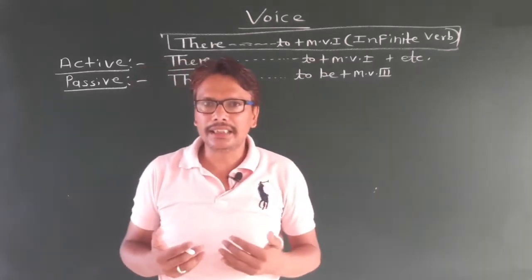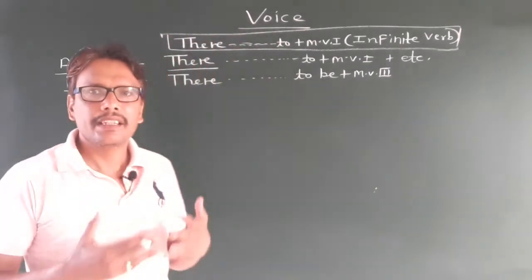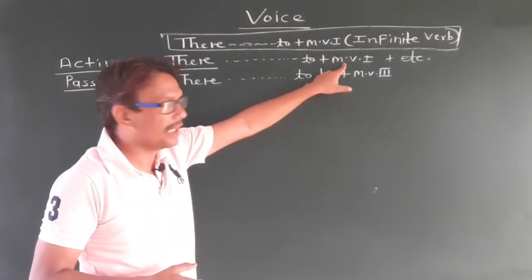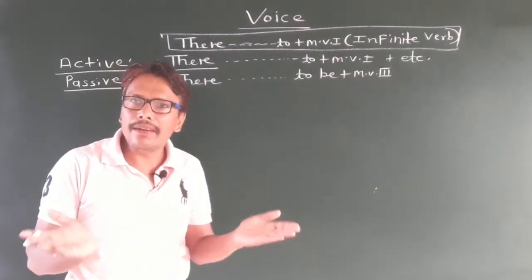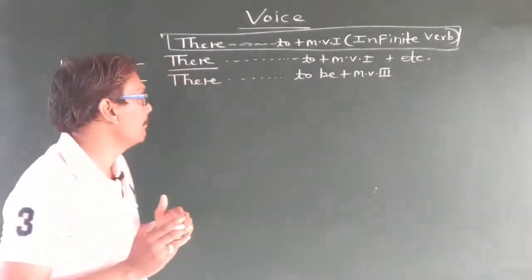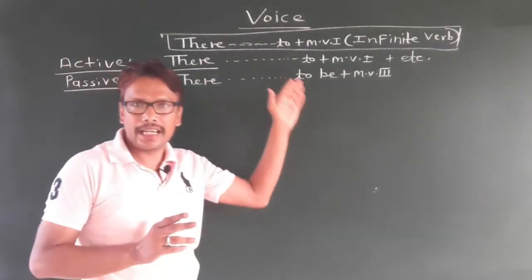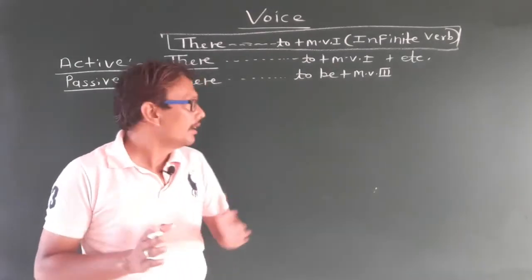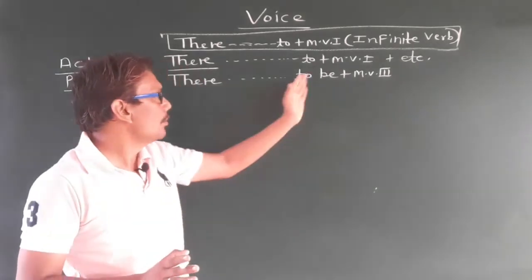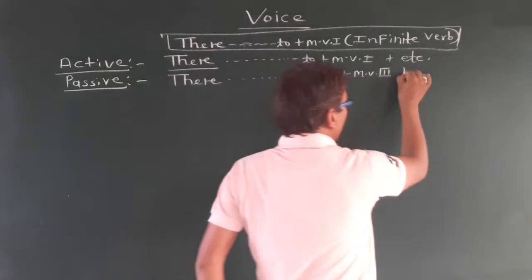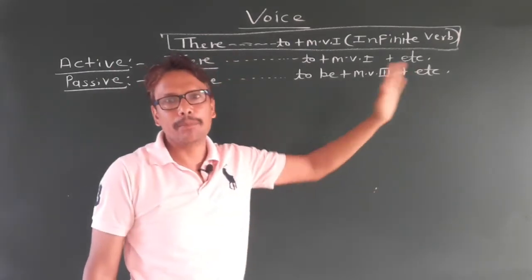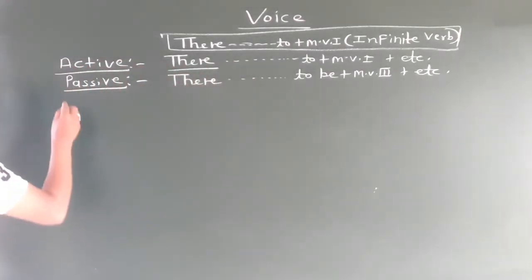So I think you are listening to me. The sentence begins with 'there' and you will get the infinitive verb, meaning 'to + V1', anywhere in the sentence. You will write the sentence as it is, but 'to + V1' is changed into 'to be + V3 + etc.' if etc. is given. We will now take some example sentences.